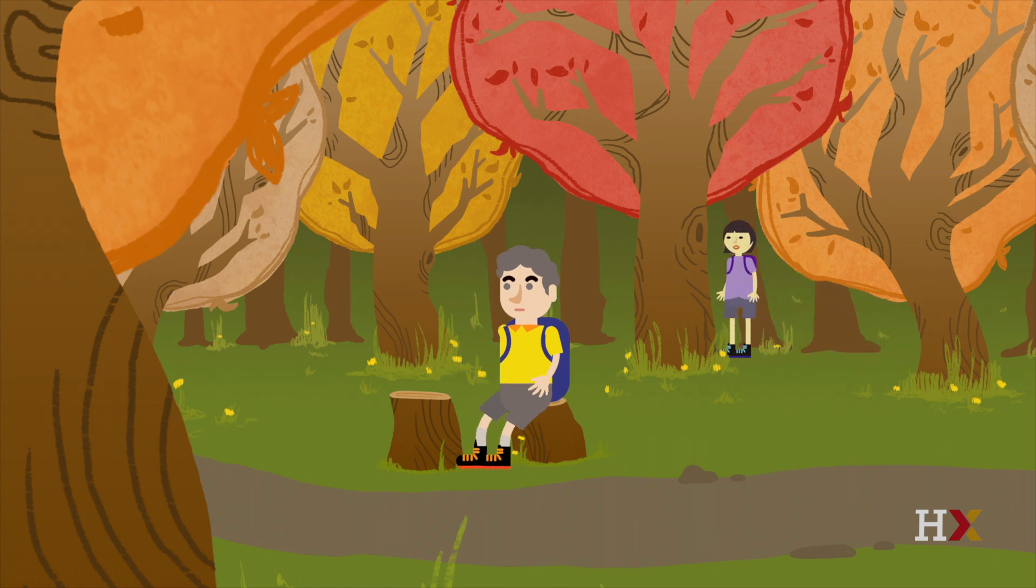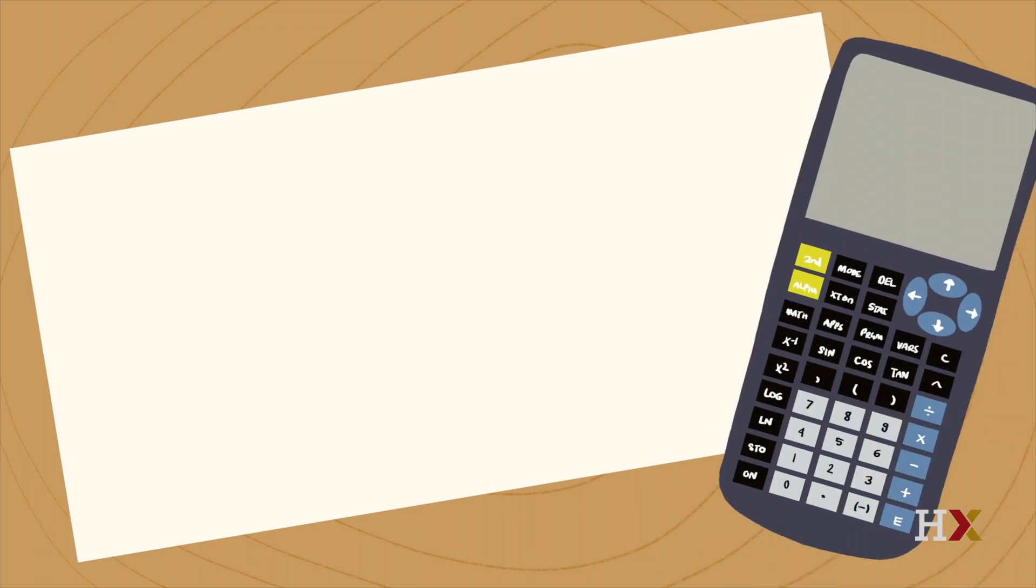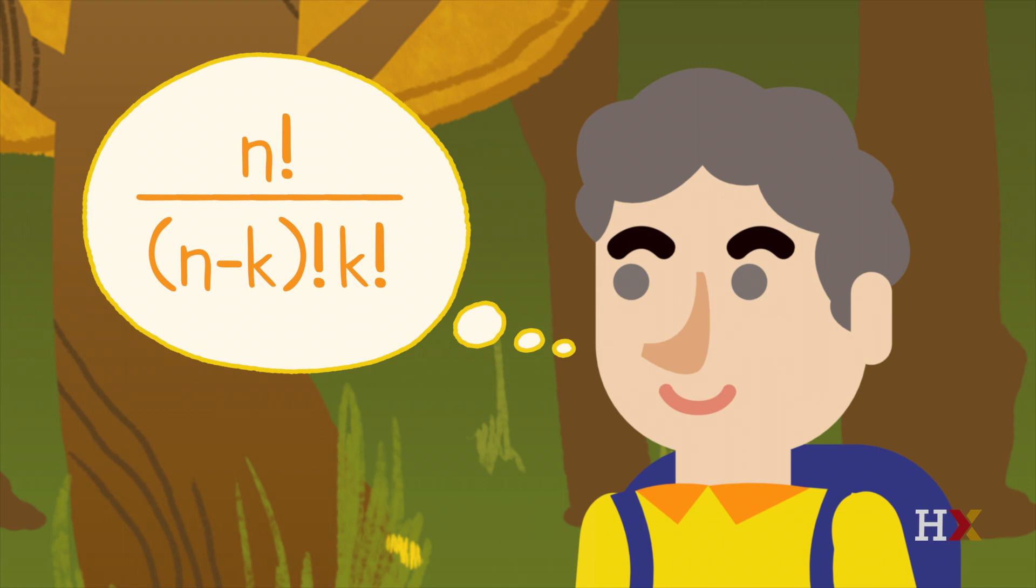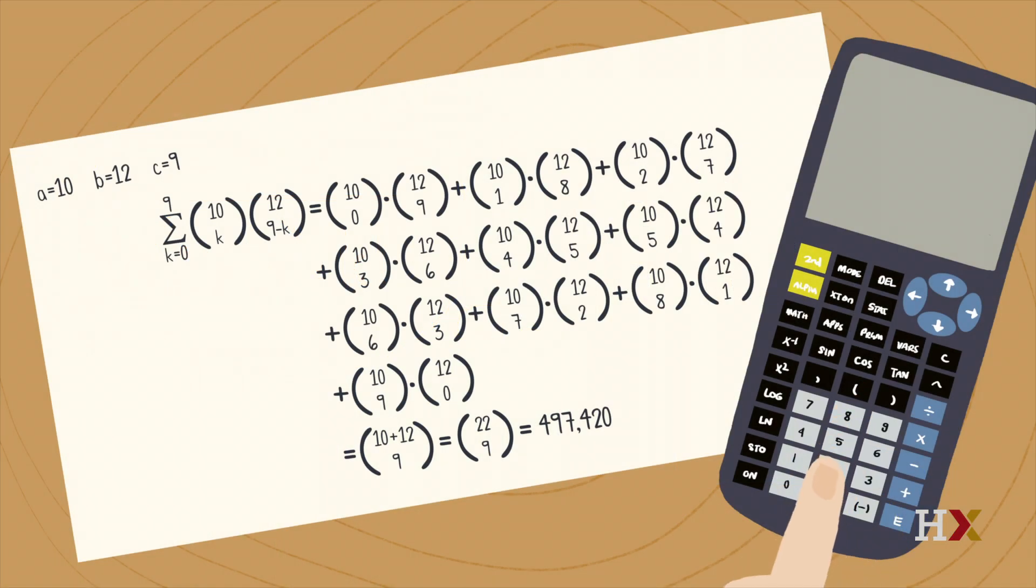Colin remembers from Stat 110 how a binomial coefficient n choose k can be defined in terms of factorials: n factorial over n minus k factorial k factorial. He tries a couple examples on his calculator. It is true in those examples, so he proceeds to work on a proof using algebra.